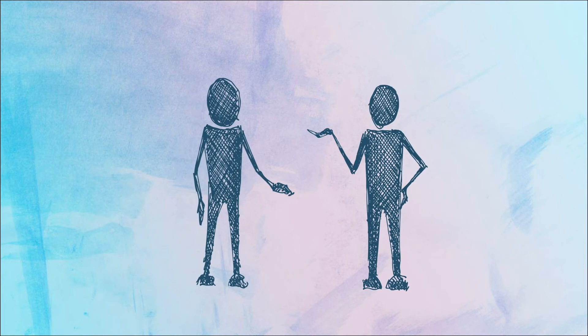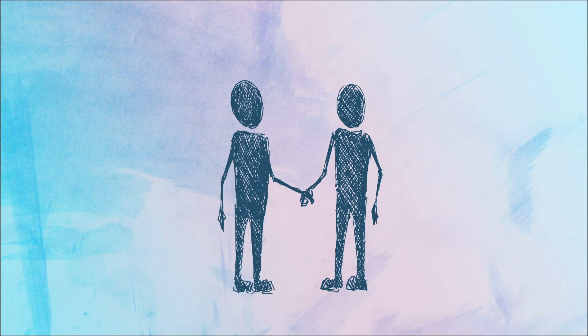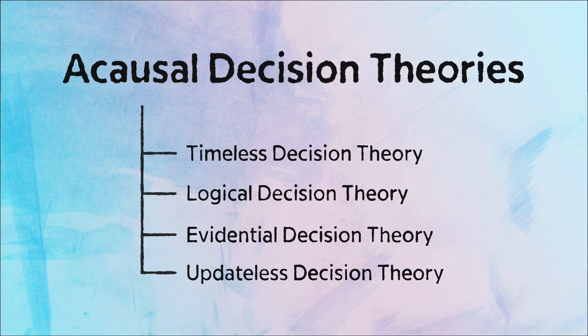For example, two players that are running a logical decision theory can achieve mutual cooperation in a prisoner's dilemma, even if there is no outside force mandating cooperation. It is the existence of these and the possibility that they will be followed that gives rise to our next and most concerning topic.